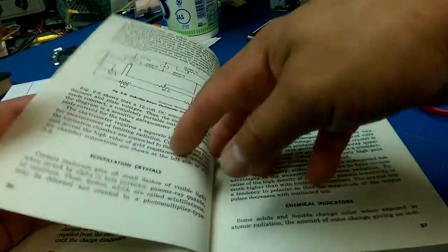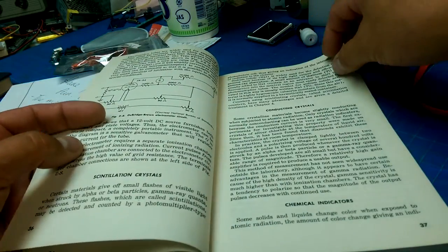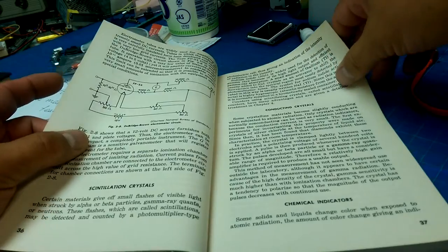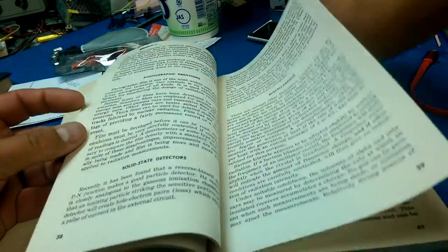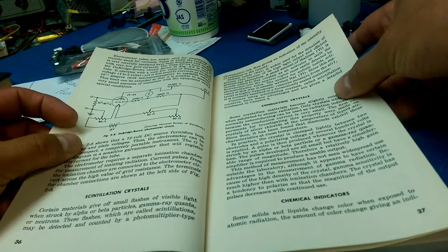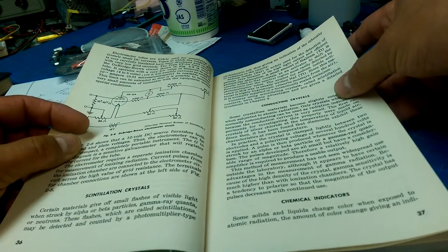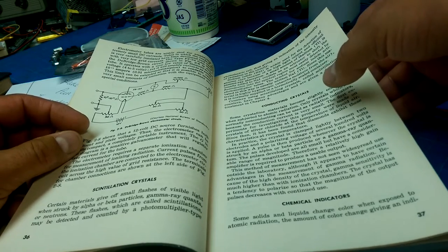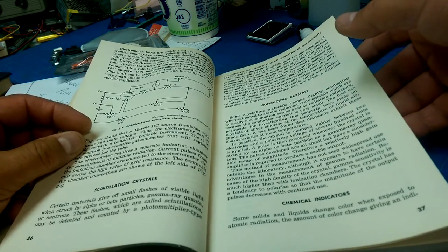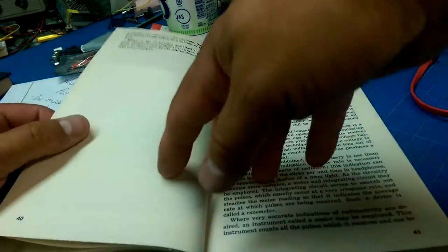And then we get into some really fascinating stuff, like some circuits using tubes that allow you to create an electrometer, which is basically detecting radiation, and it uses the radiation to adjust the circuit, and you can count pulses and things like that.